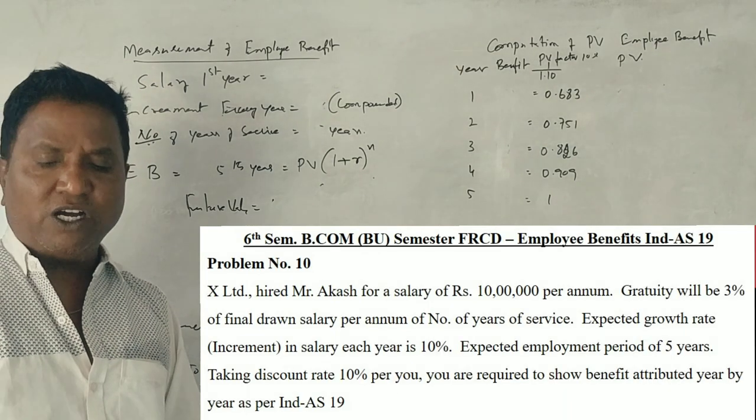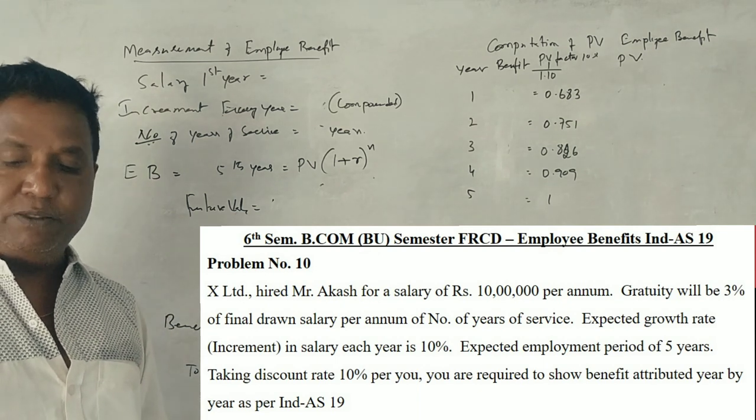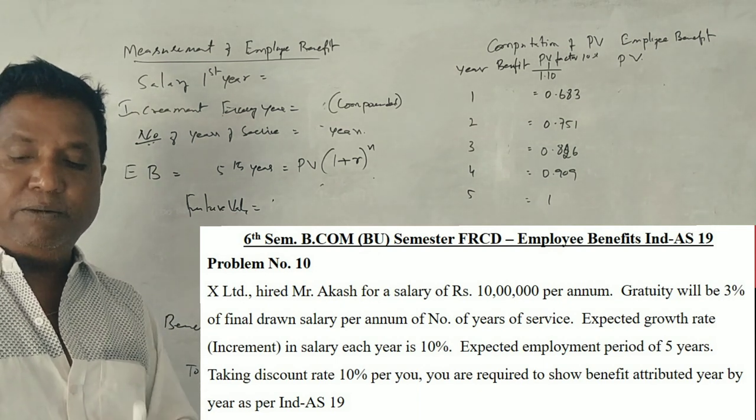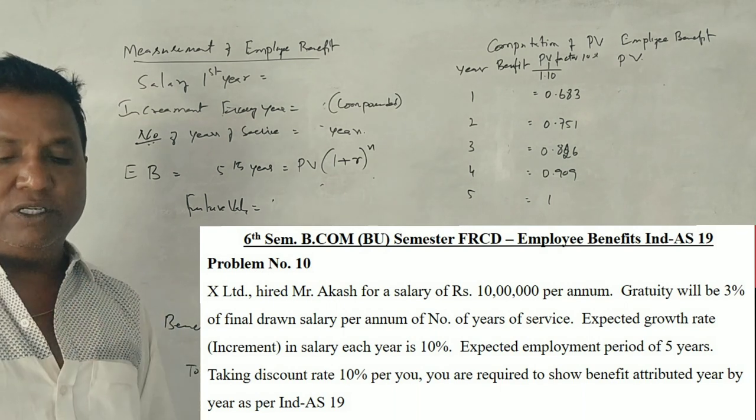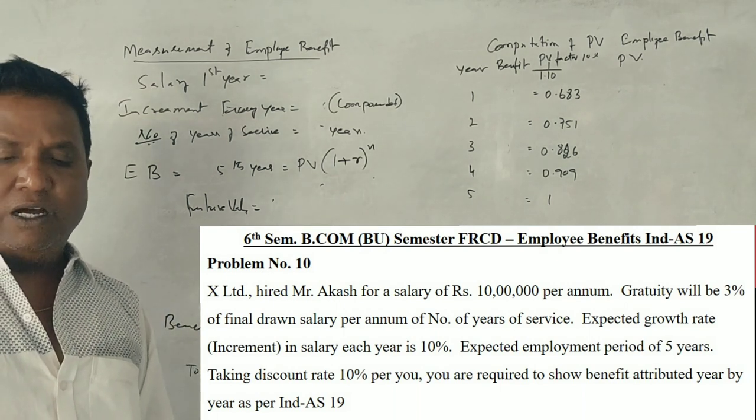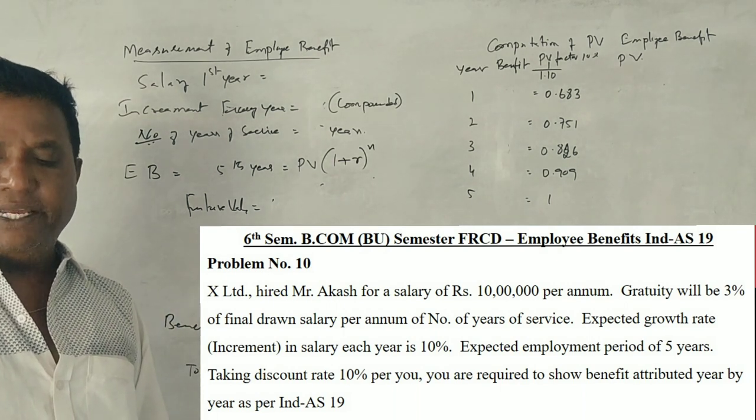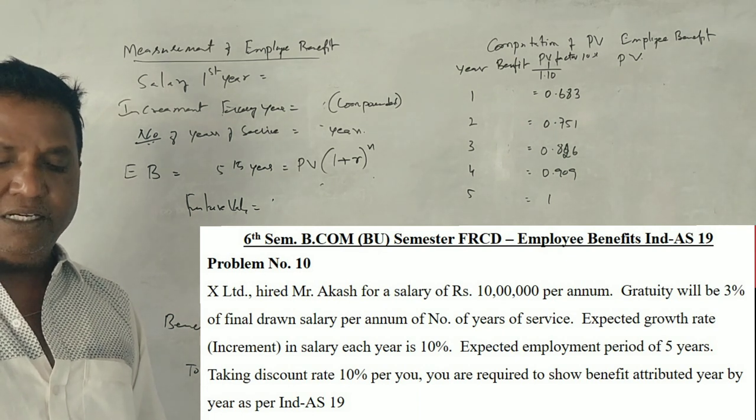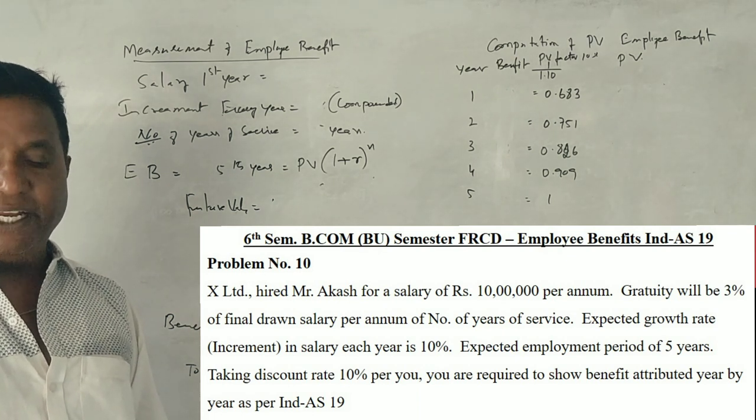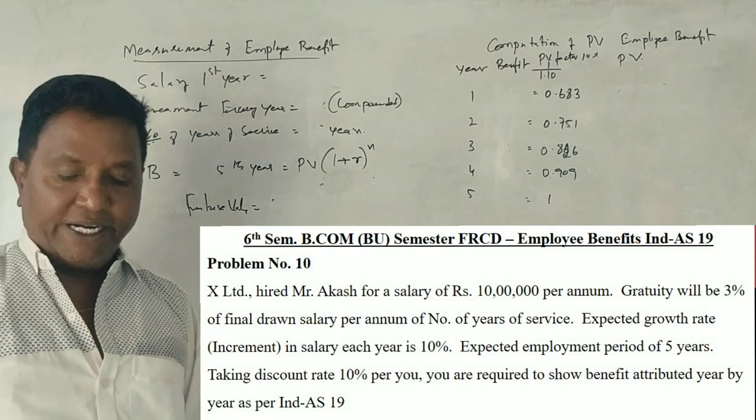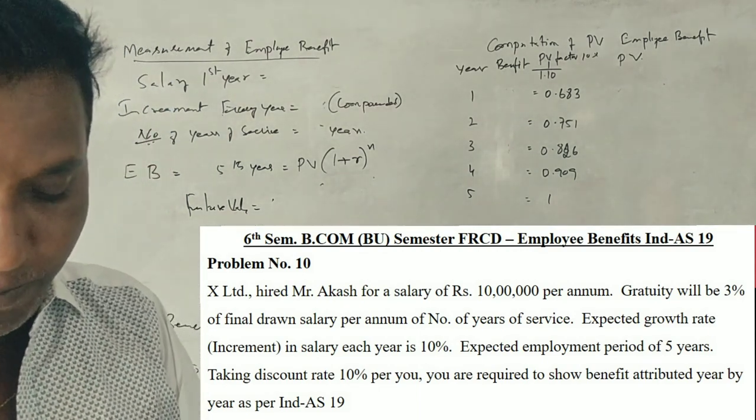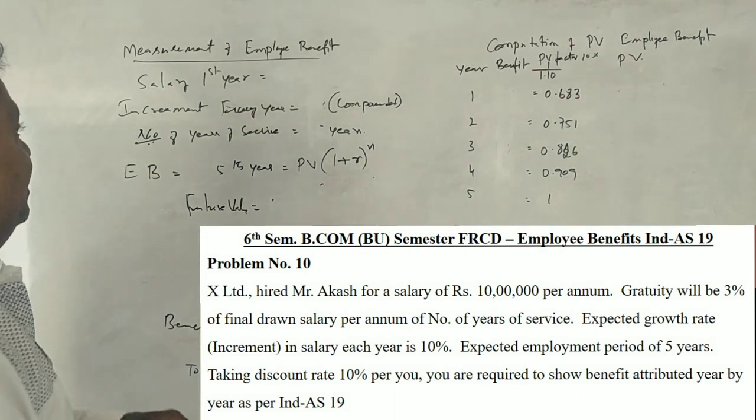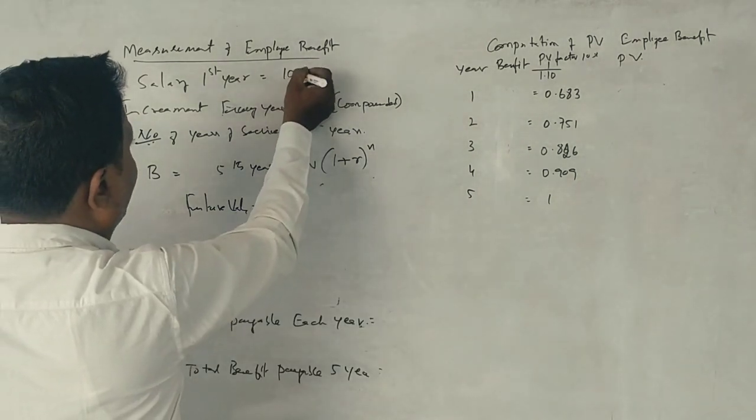X Limited hired Mr. Arkash for a salary of 10 lakh rupees per annum. Gratuity will be paid at 3% of final drawn salary per annum multiplied by number of years of service. Expected growth rate or increment in salary each year is 10%. Expected employment period is 5 years and discount rate is 10%. Calculate employment benefit payable per annum.